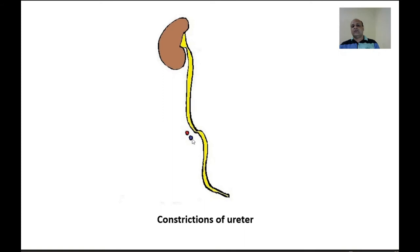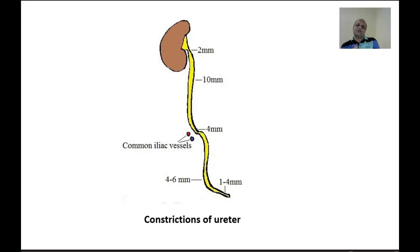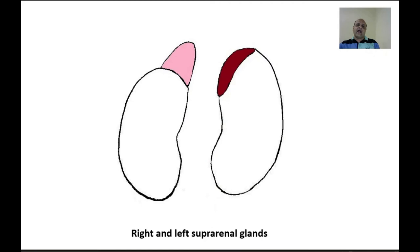The normal diameter of the ureter is 6–8 mm, but at the constrictions it may narrow to 2 mm or 1–4 mm. These constrictions are important because ureteric stones may become lodged or impacted there. Kidney stones — mostly calcium stones — travel with urine toward the bladder and may get lodged at these constrictions, resulting in renal colic, which is an extremely painful condition causing ureteric spasm.